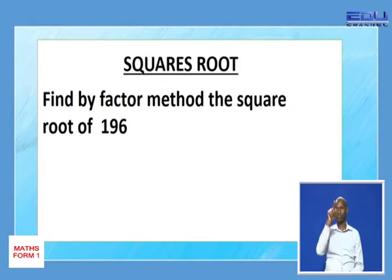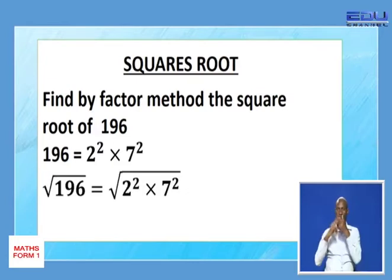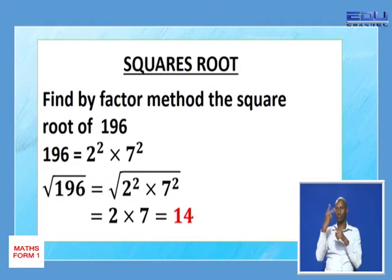Very good. This is the answer. As a product of prime factors, it is 2 to power 2 times 7 to power 2. So, the square root of 196 is the square root of 2 to power 2 times 7 to power 2. Divide the powers by 2. It will give you 2 times 7. And that will give you 14. That is the factor method of finding the square root.